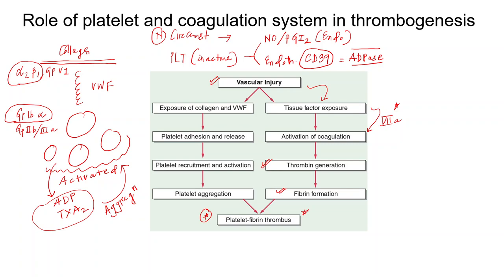More details about the platelet and coagulation pathway will be studied in the hematology section. In arterial thrombus, platelet is more predominant; in venous thrombus, fibrin is more along with trapping of red blood cells. However, arterial thrombus also contains some fibrin, and venous thrombus also contains some platelets.